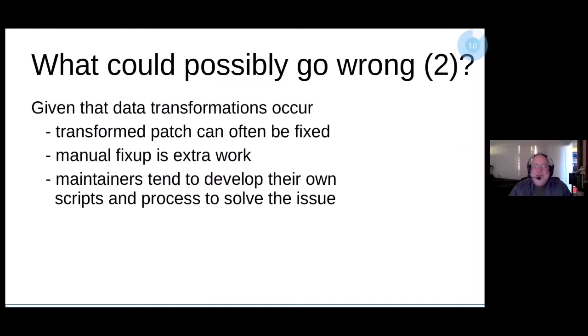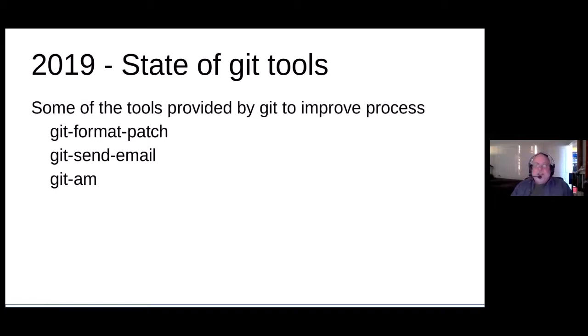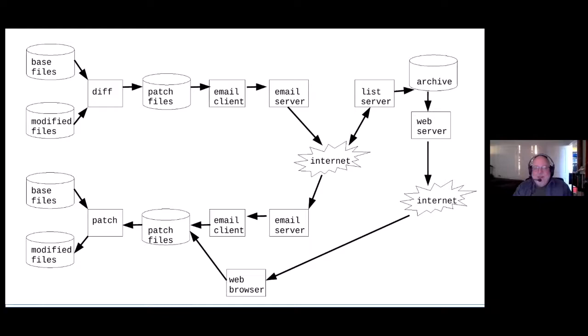Given that data transformations do occur, what do we do to react to that? We can sometimes fix those transformed patches — for example, a patch may be converted from plain text into a base64 representation, and there are tools that can undo that. But that manual fix-up is extra work. Over the years, different maintainers and developers have developed their own sets of scripts and processes to solve these issues, so we do not have consistency or scaling. Some solutions have evolved — as of 2019 the git tools being used were git format-patch, git send-email, and git am. Going back to the diagram, git format-patch and git send-email provide useful tools to create and email patches, and at the receiving end git am allows us to take patch files and apply them to a tree.